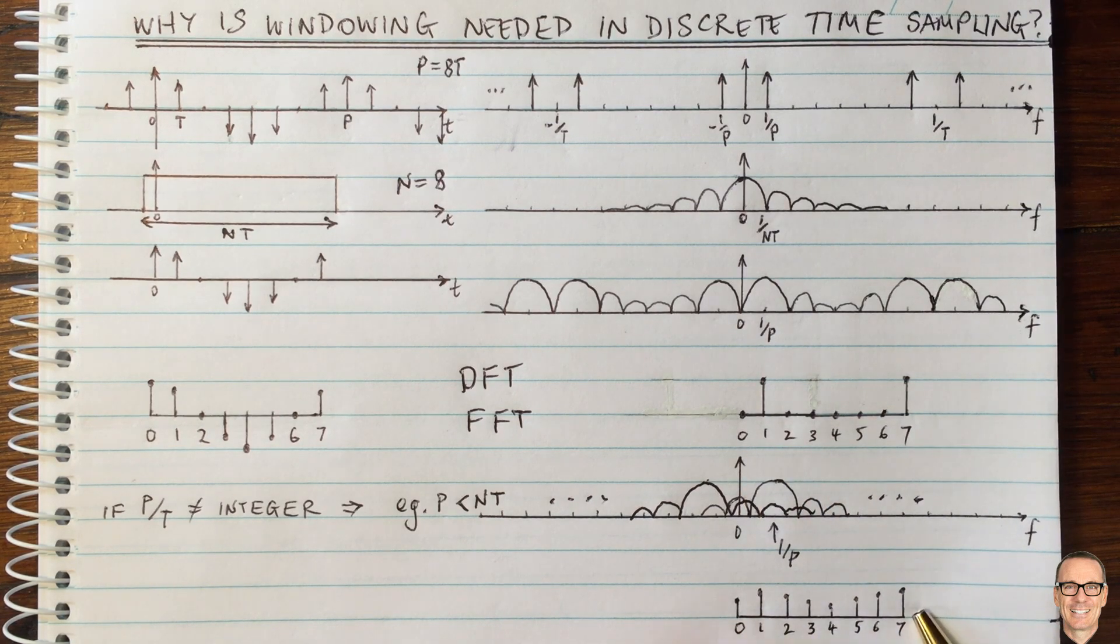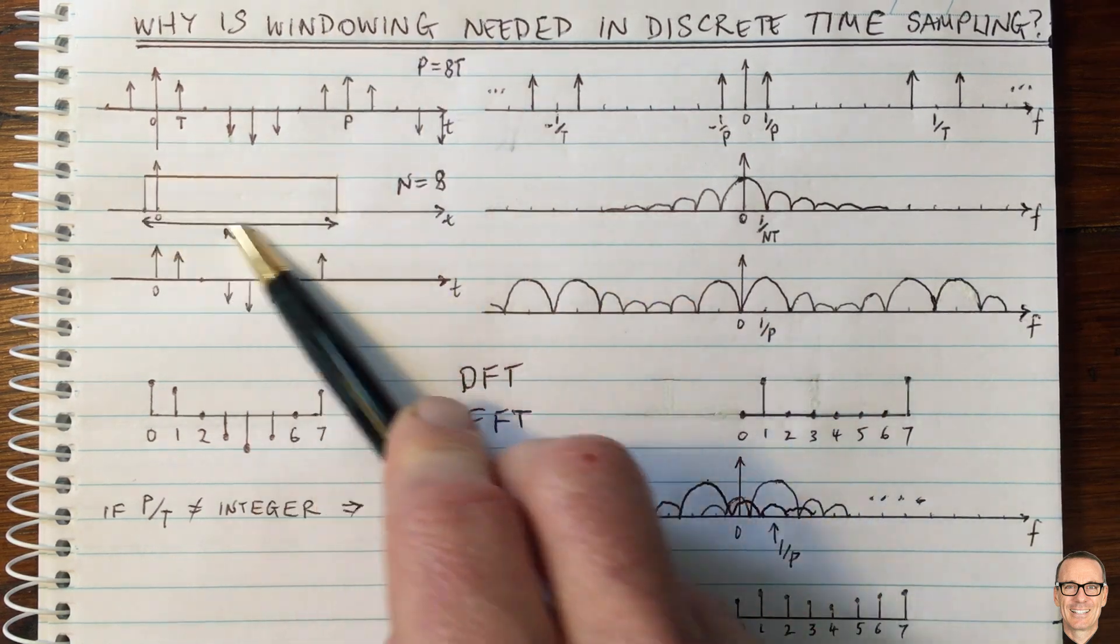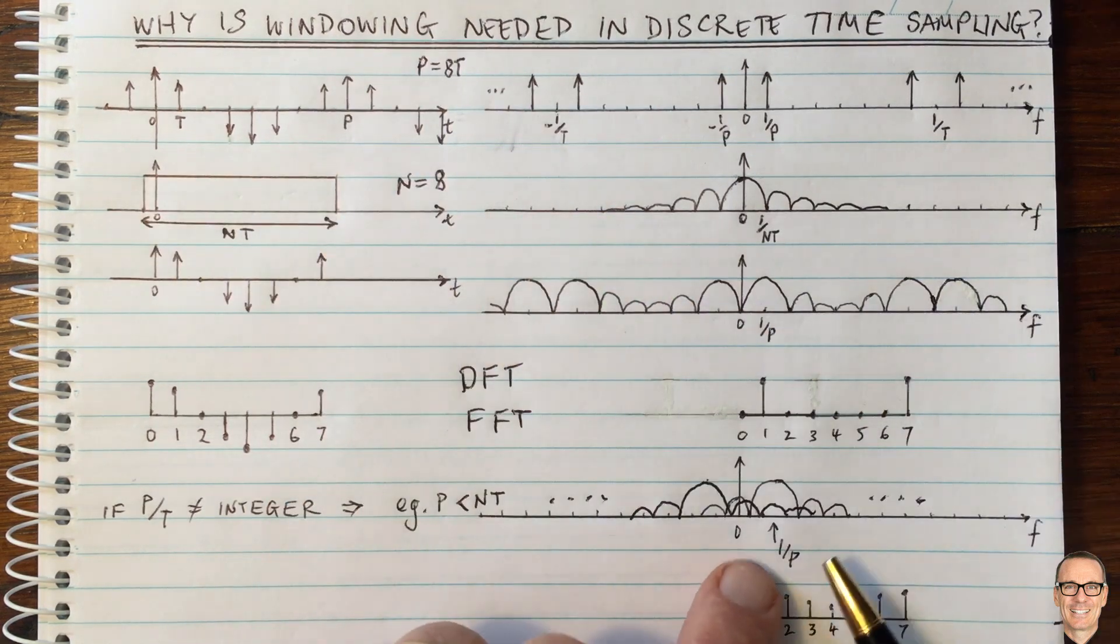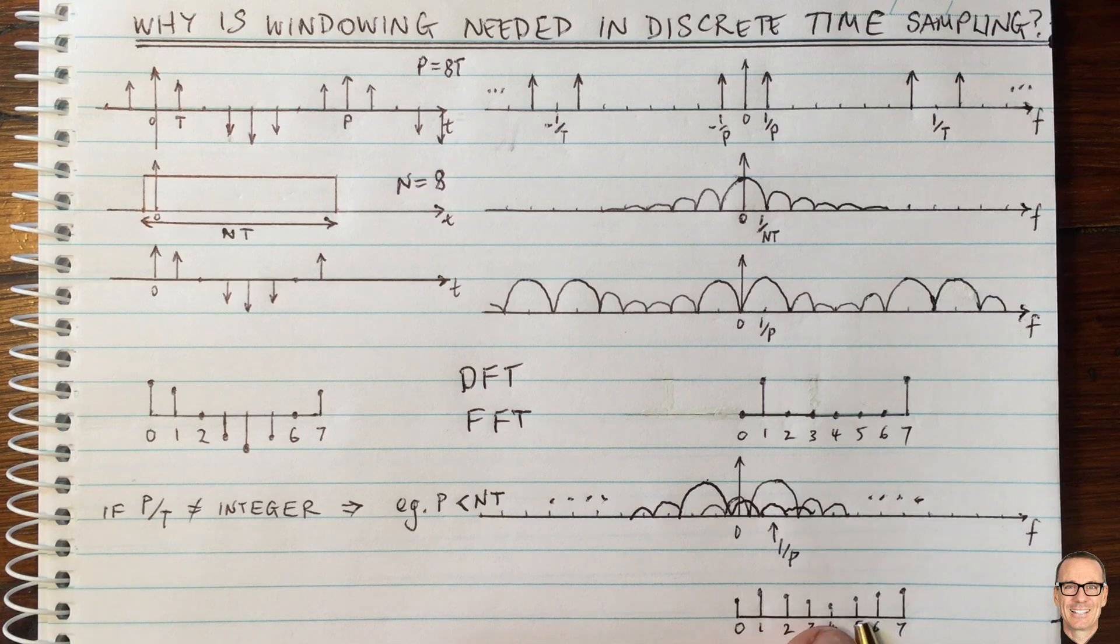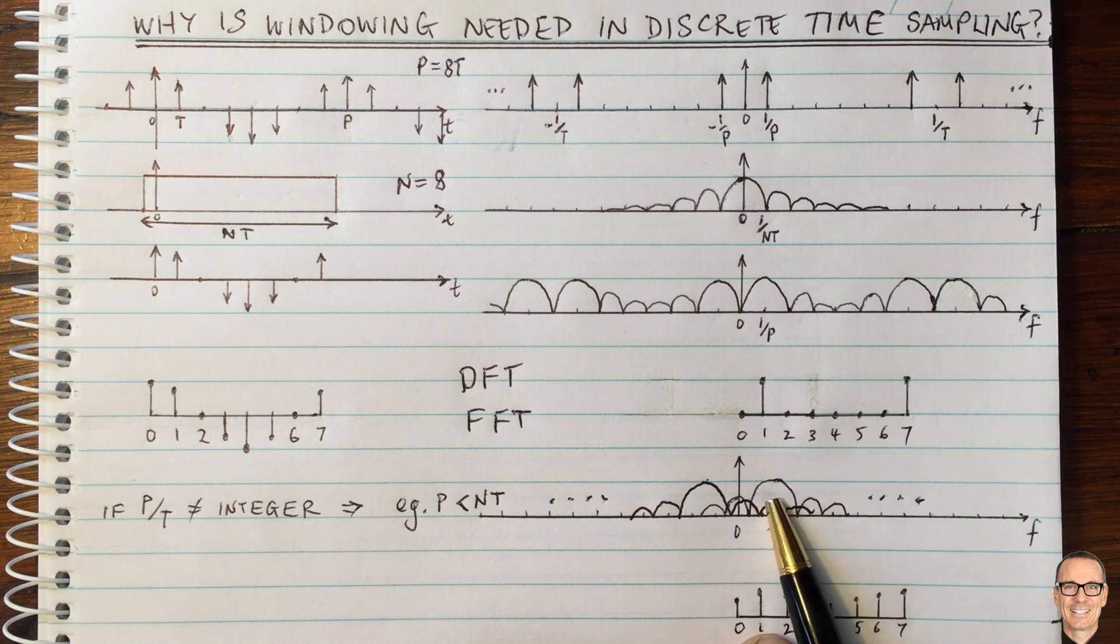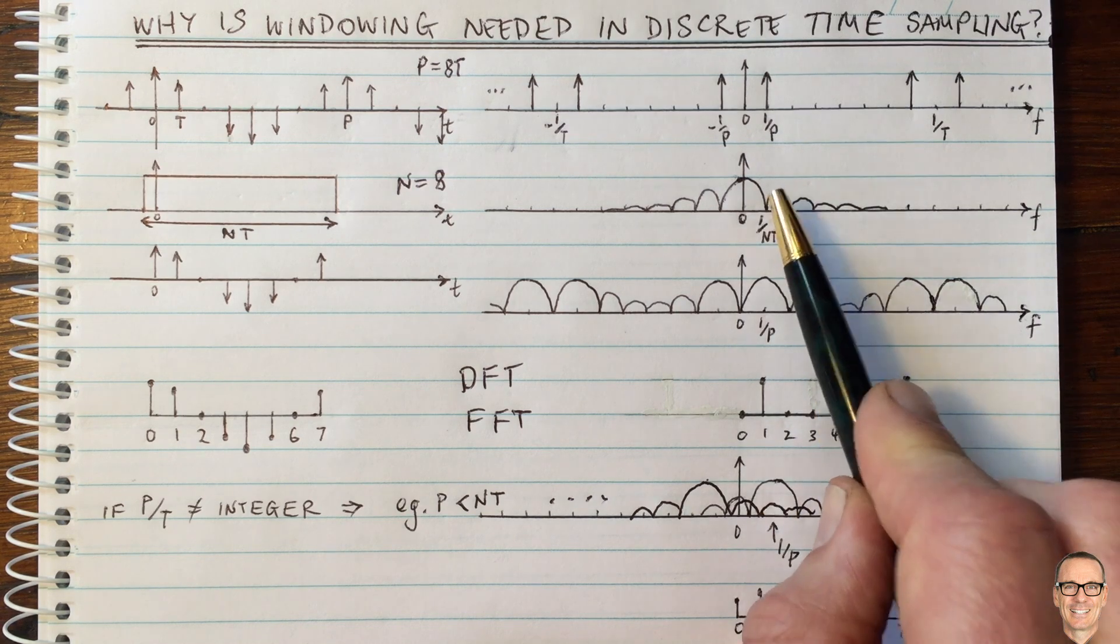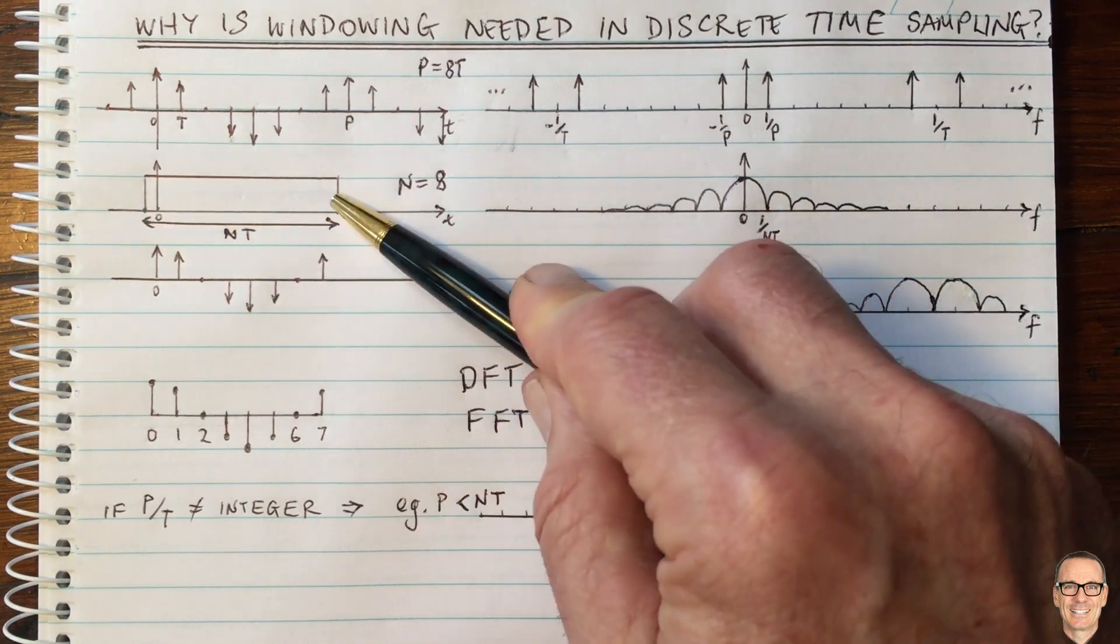This is the challenge. This is why you need windowing. You need different shapes of windows here. Clearly, these values in this particular case, the values that aren't at one and seven, they are related to the side lobes of this function. So the side lobes from this function here.